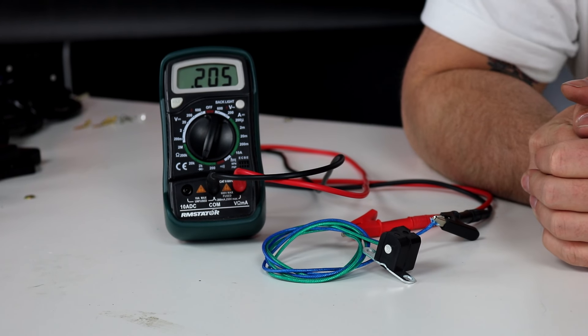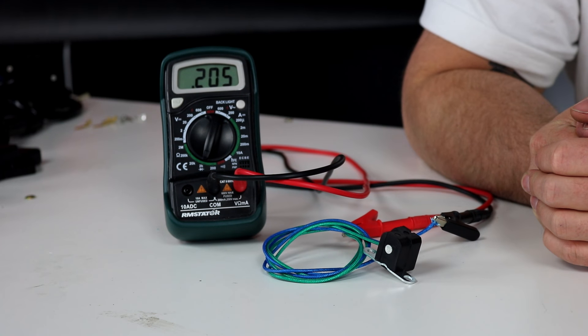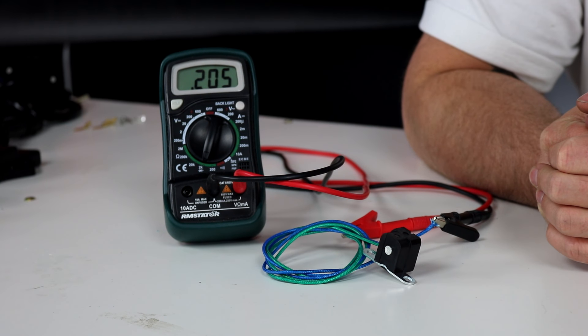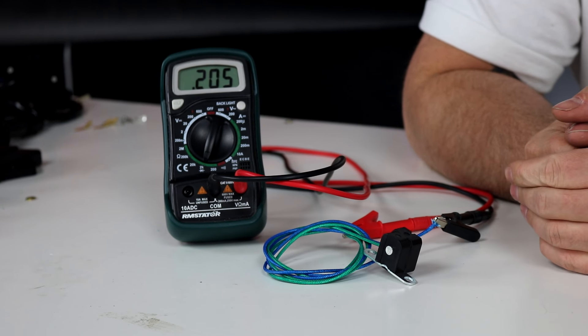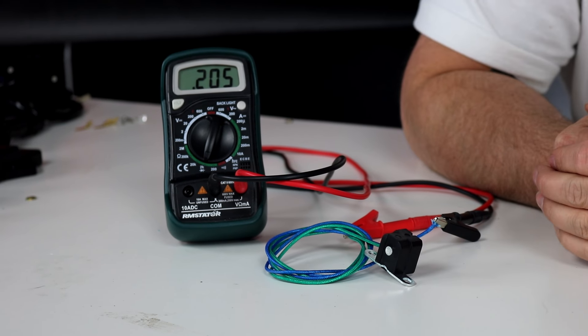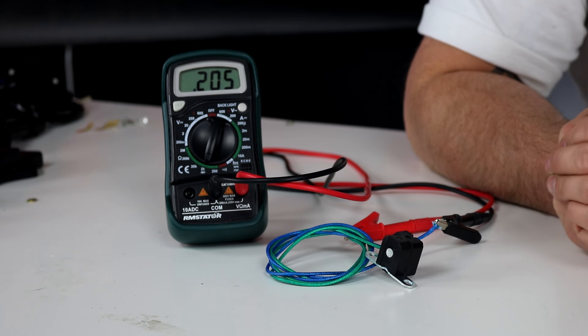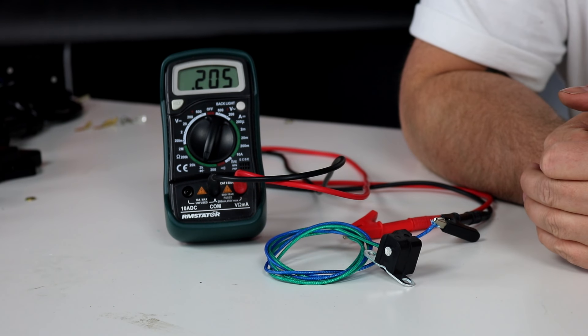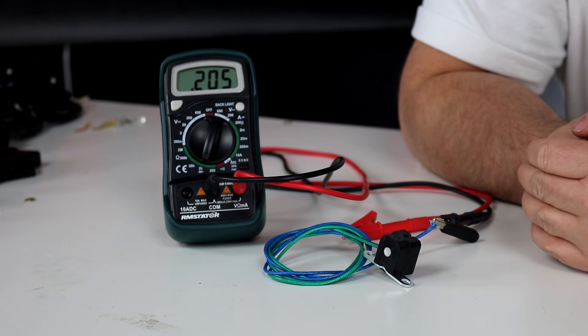The pickup coil provides your timing signal for your ignition system so it's a critical part of your motor. A pickup coil is very simple, it is just a coil of wire inside this wrapped around a little magnet, so we can test them by knowing what the resistance should be and then measuring the resistance across that coil.